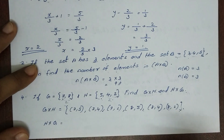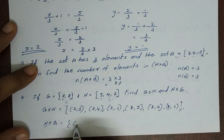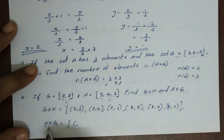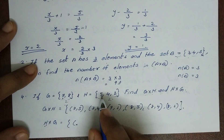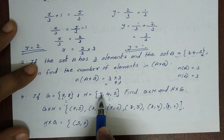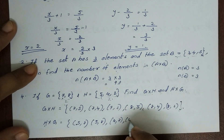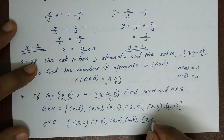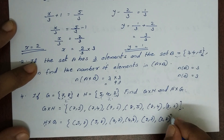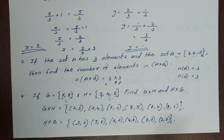Now for H×G, the first element of each ordered pair comes from H. The pairs are: (5,7), (5,8), (4,7), (4,8), (2,7), (2,8). So we have 6 ordered pairs in H×G as well.